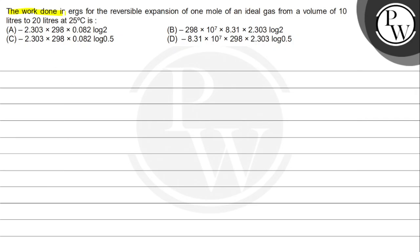Let's see this question: the work done in reversible expansion of one mole of an ideal gas from volume 10 liters to 20 liters at 25 degrees Celsius. Option 1 is minus 2.303 × 298 × 0.082 × log 2. Option 2 is minus 298 × 10⁷ × 8.314 × 2.303 × log 2. Option 3 is minus 2.303 × 298 × 0.082 × log 0.5. Option 4 is minus 8.31 × 10⁷ × 298 × 2.303 × log 0.5.